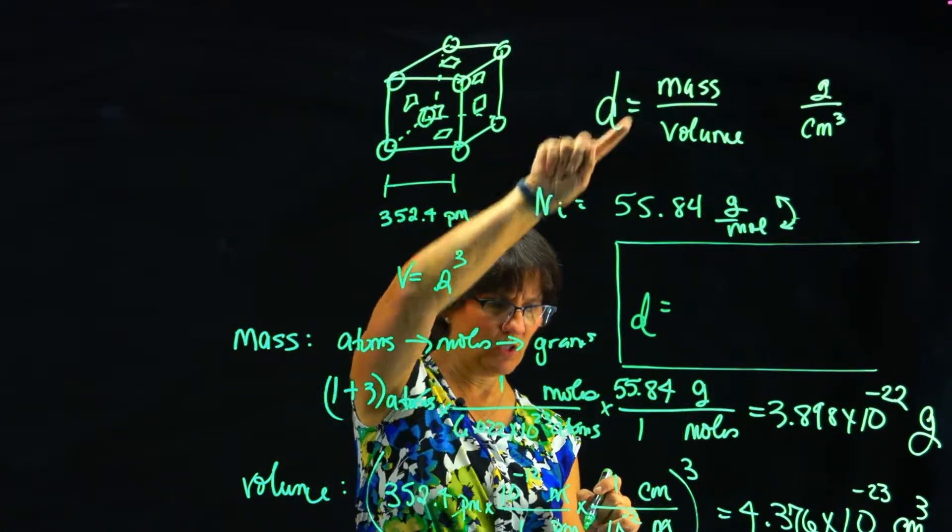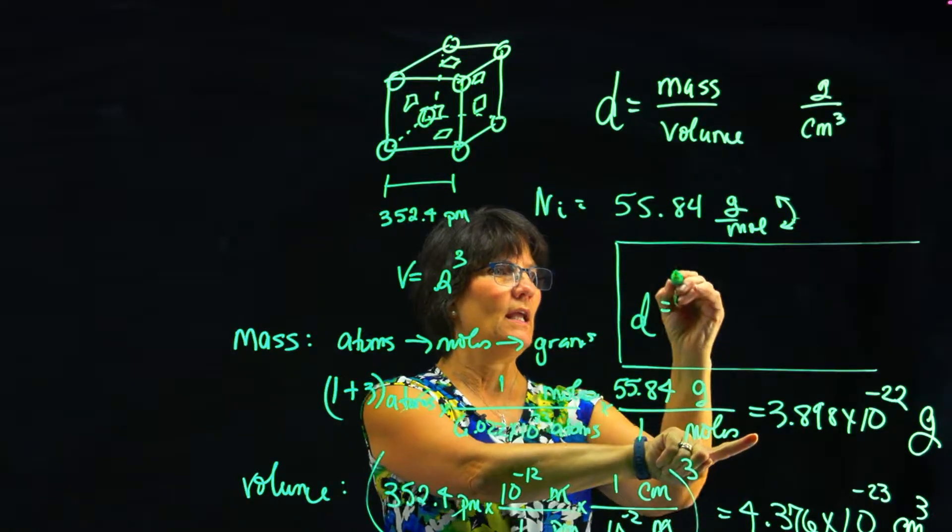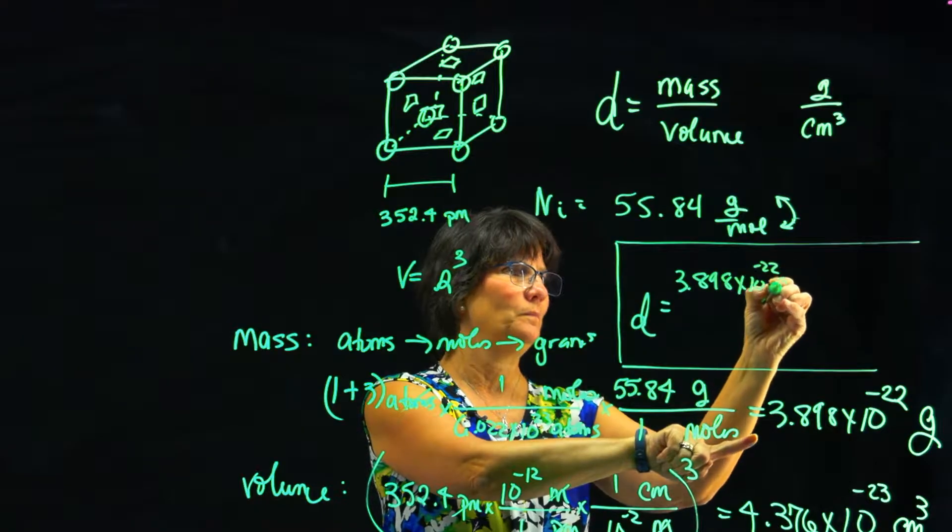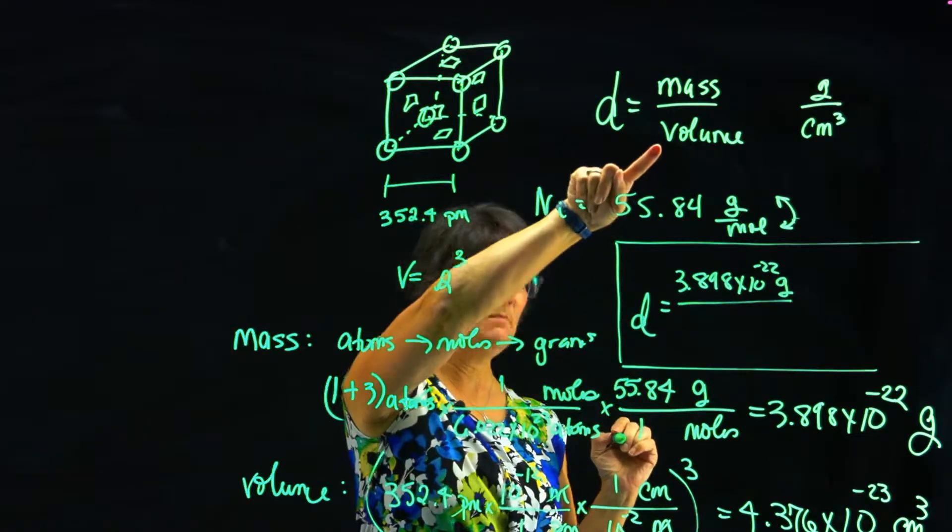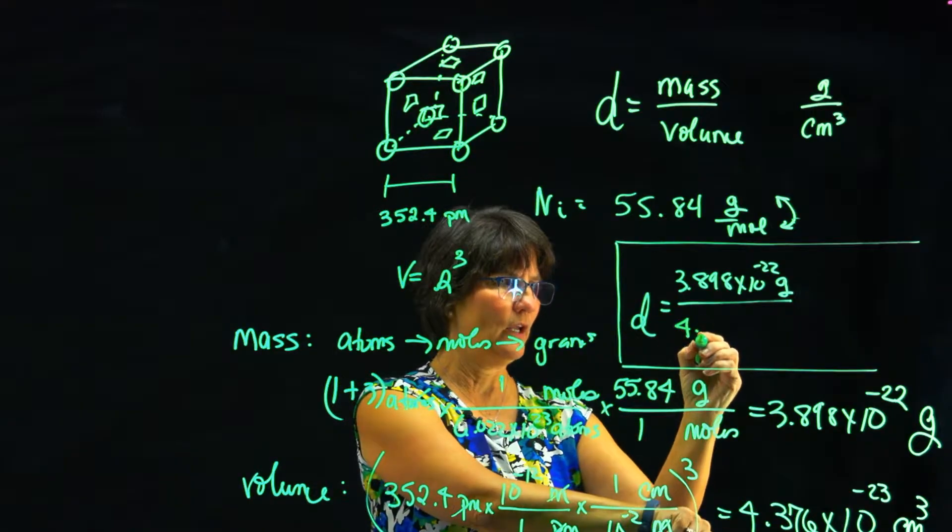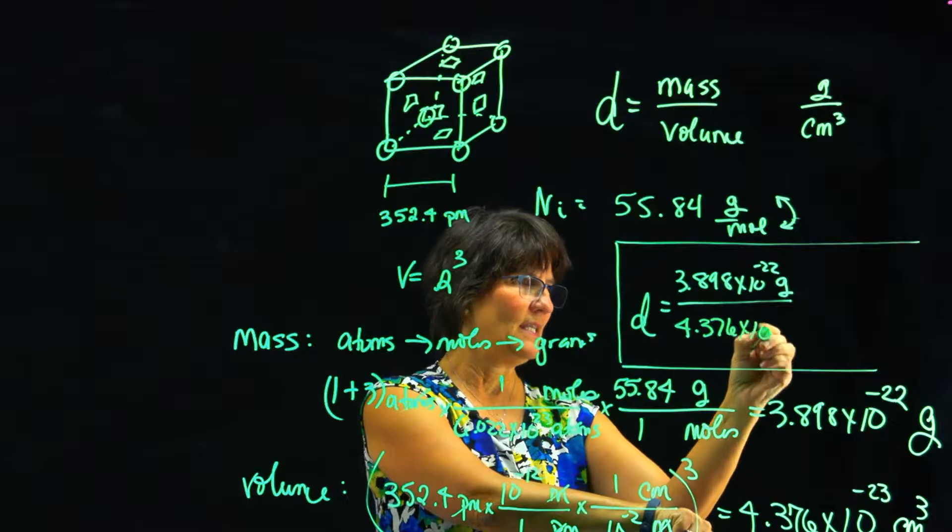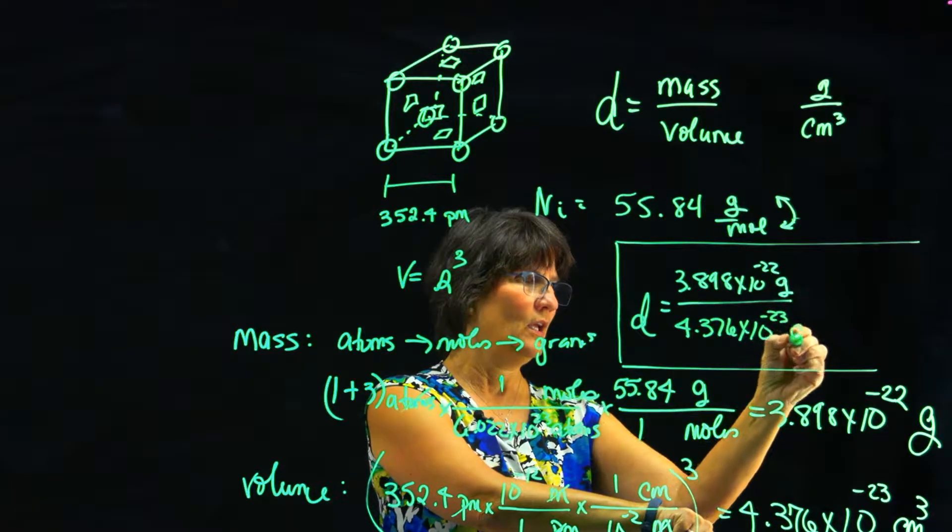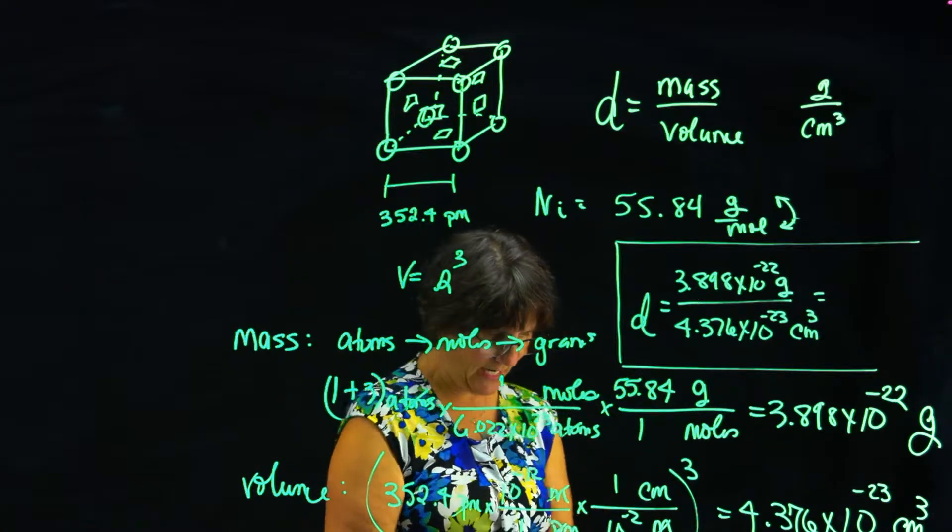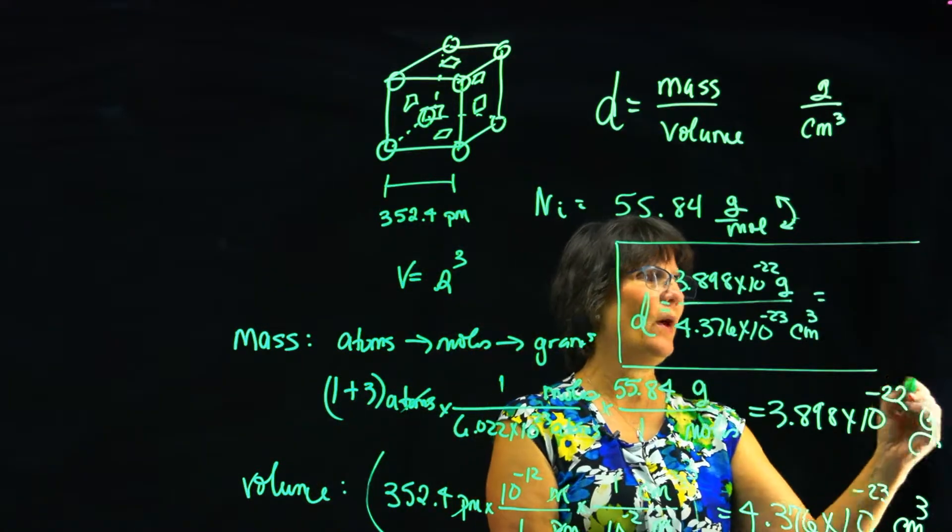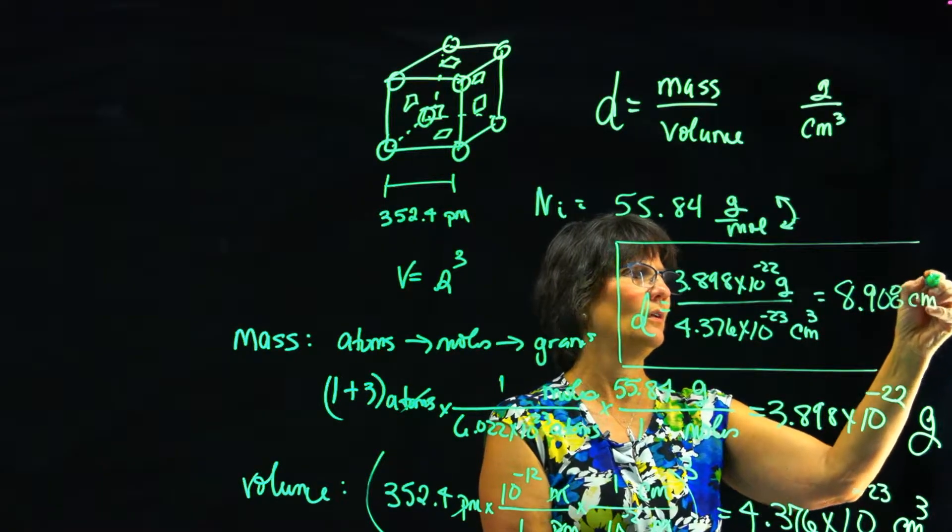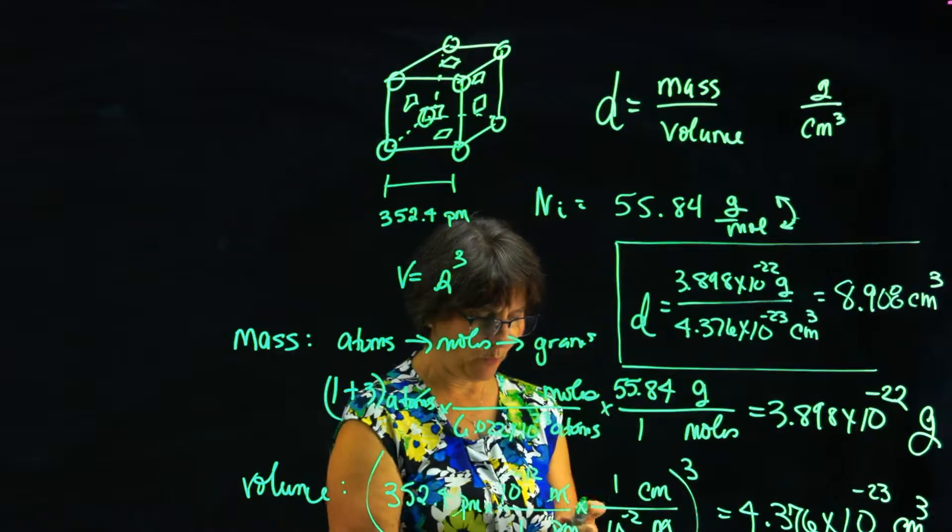Well, let's see here. I want to put the density in this little box here so that it's close to where my formula is. Density is mass. So what's my mass? 3.898 times 10 to the minus 22, divided by volume. What's my volume? 4.376 times 10 to the minus 23 cubic centimeters. And if you plug that into your calculator, in order to obtain density, you have 8.908 grams per cubic centimeter.